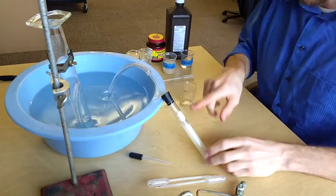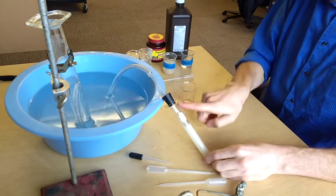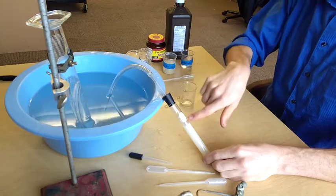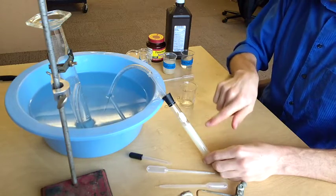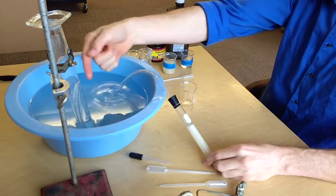Now it's very important that you keep your test tube pointed up, so any gas that gets formed actually goes out the tube. If you flip this over, it'll push the yeast liquid up through the tube, which will go through the container.